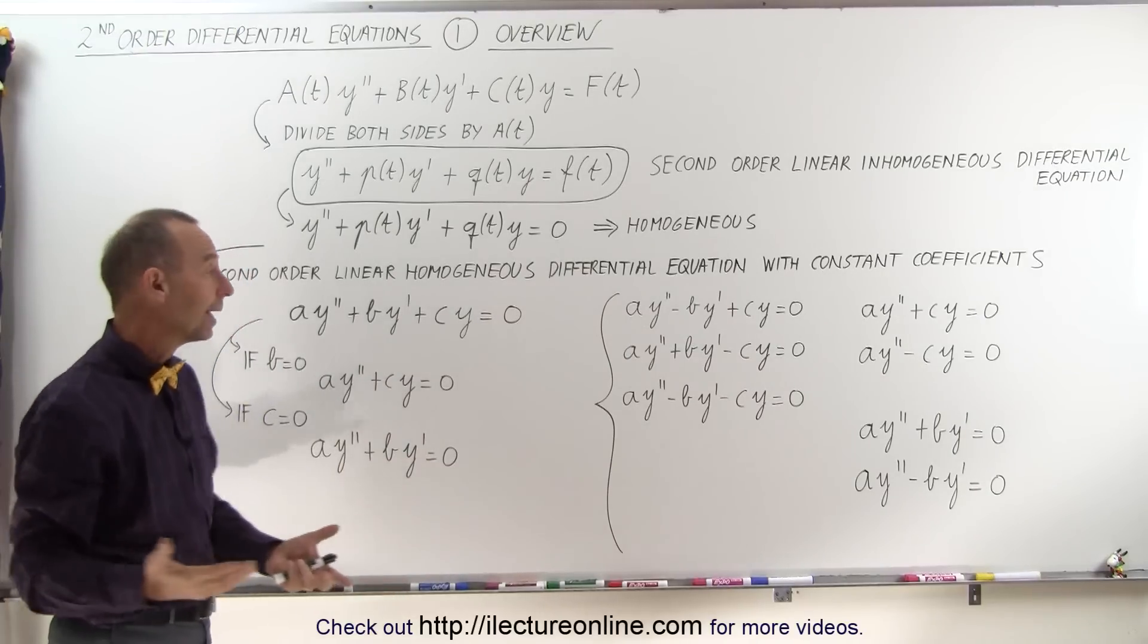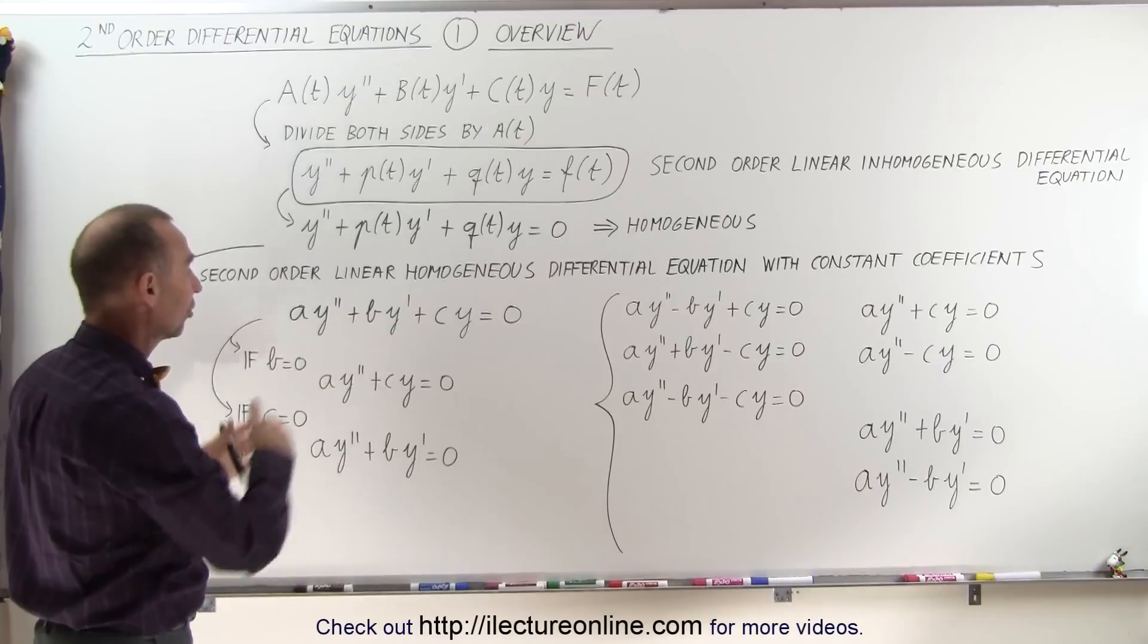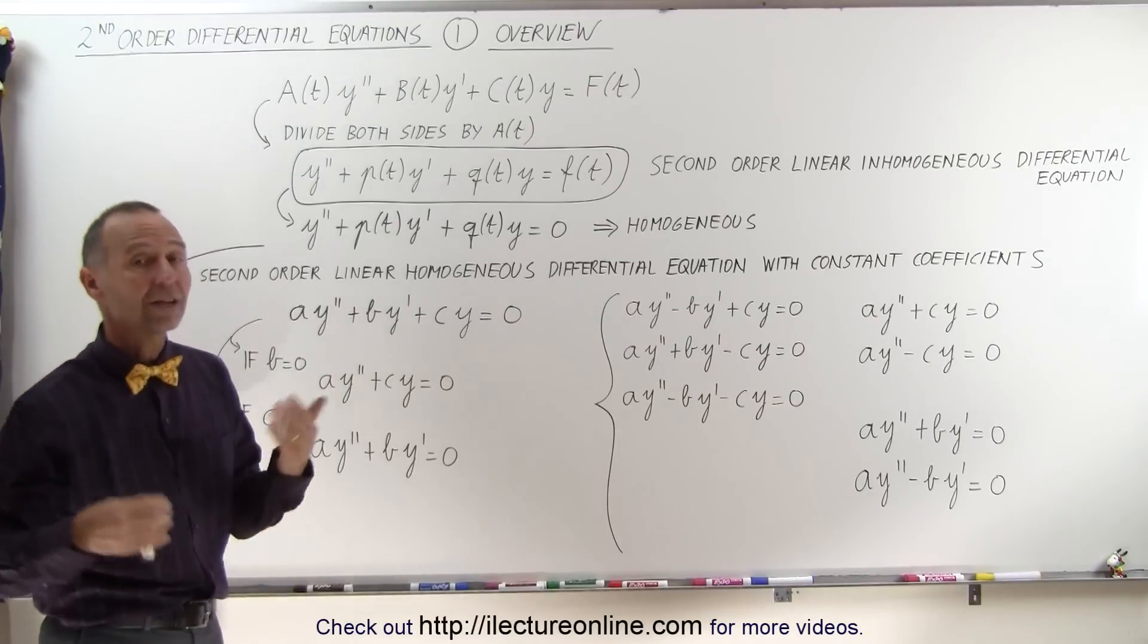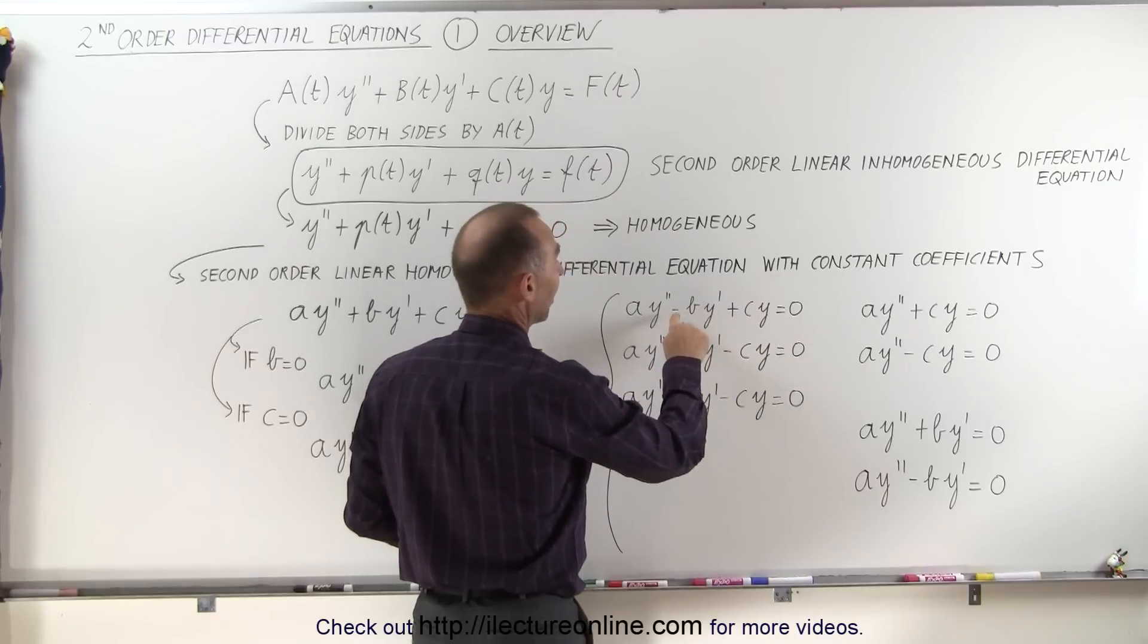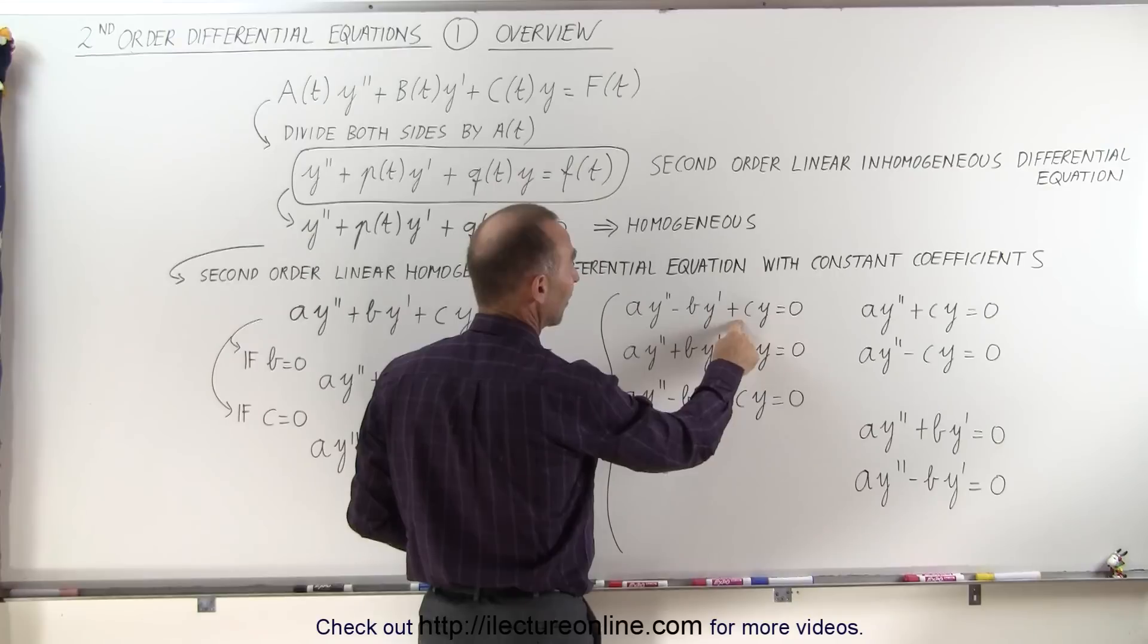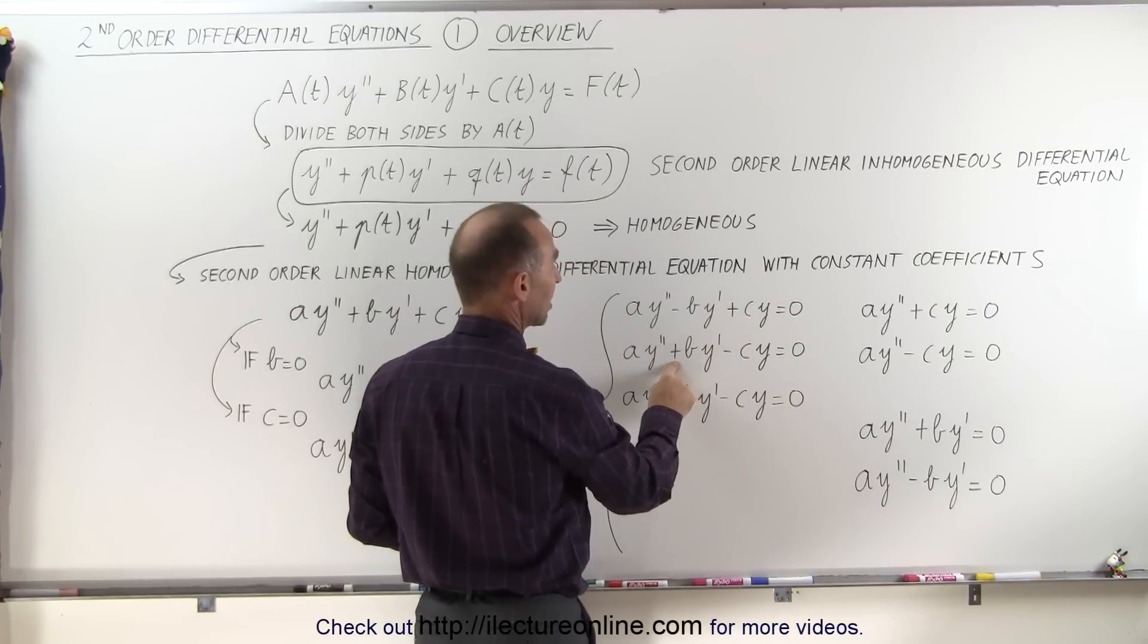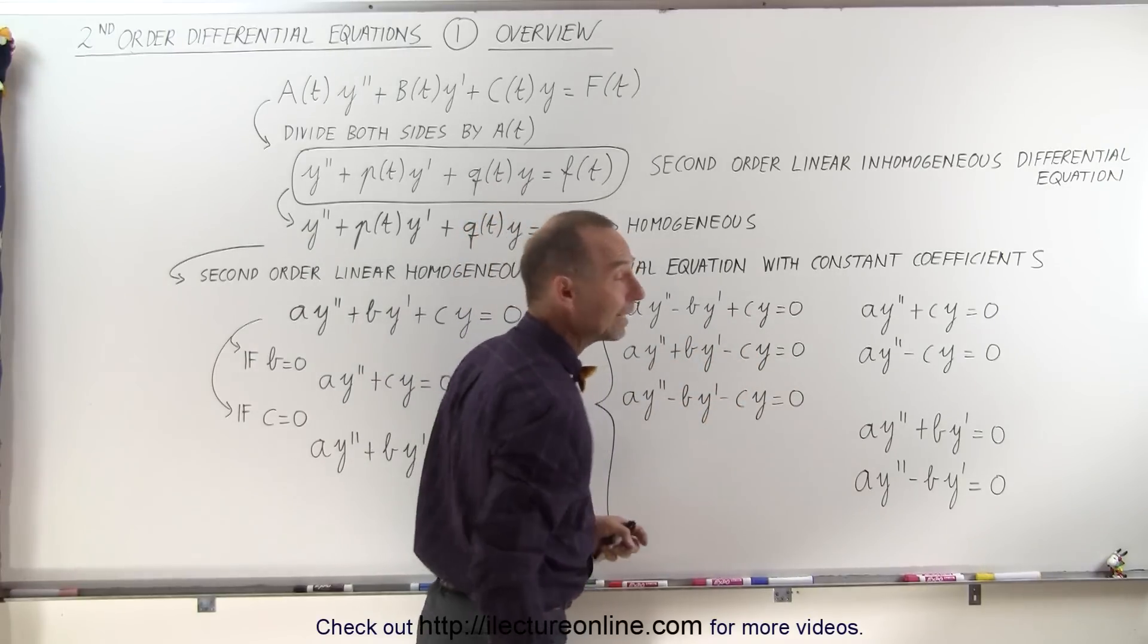And then you can see that depending upon which constant is set equal to zero, or if none of them are equal to zero, you can also end up with something where we have a negative value here and a positive value there, or a positive value here and a negative value there, or both constants are negative.